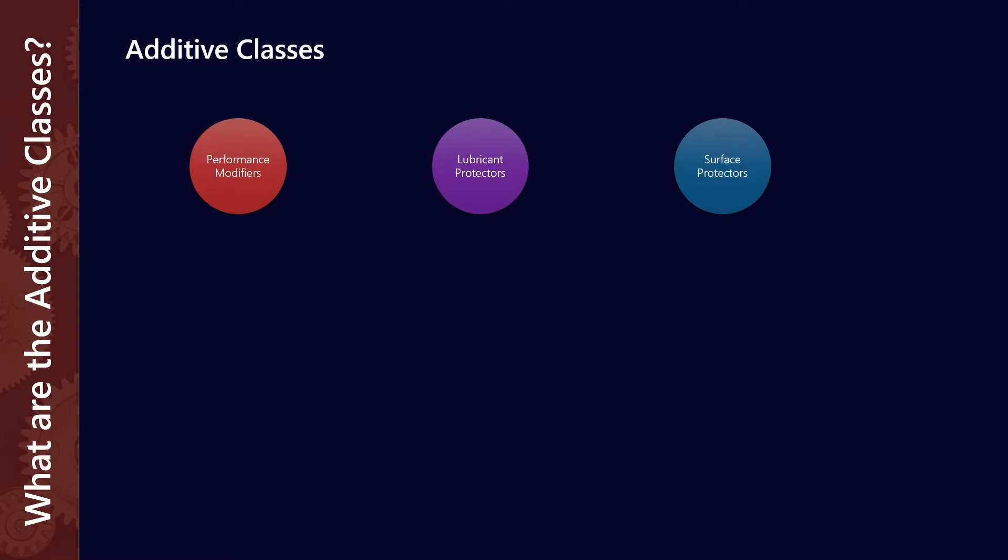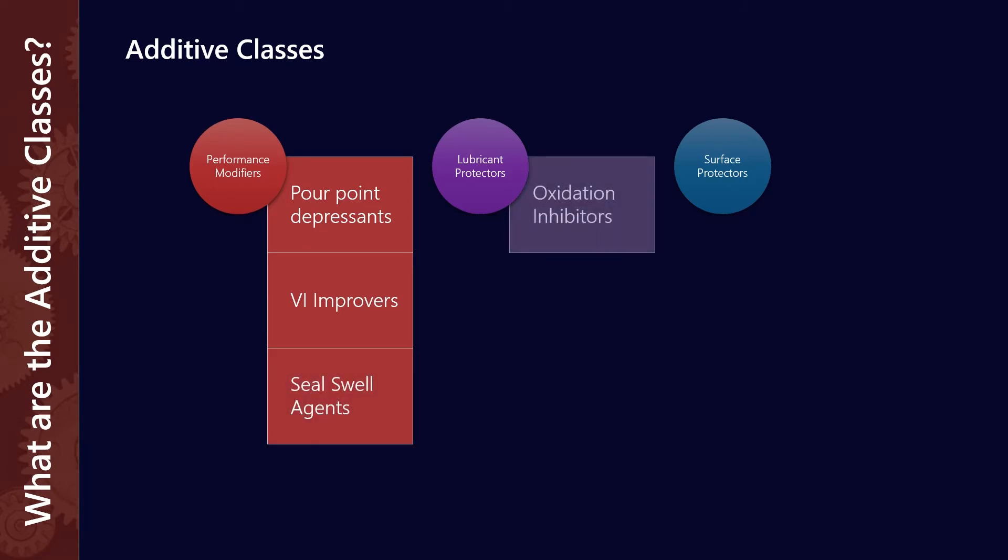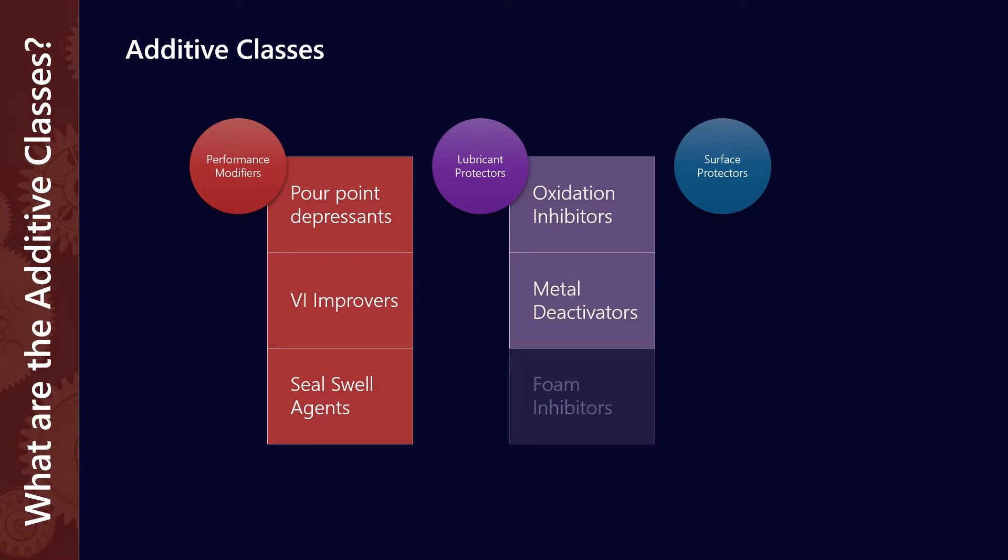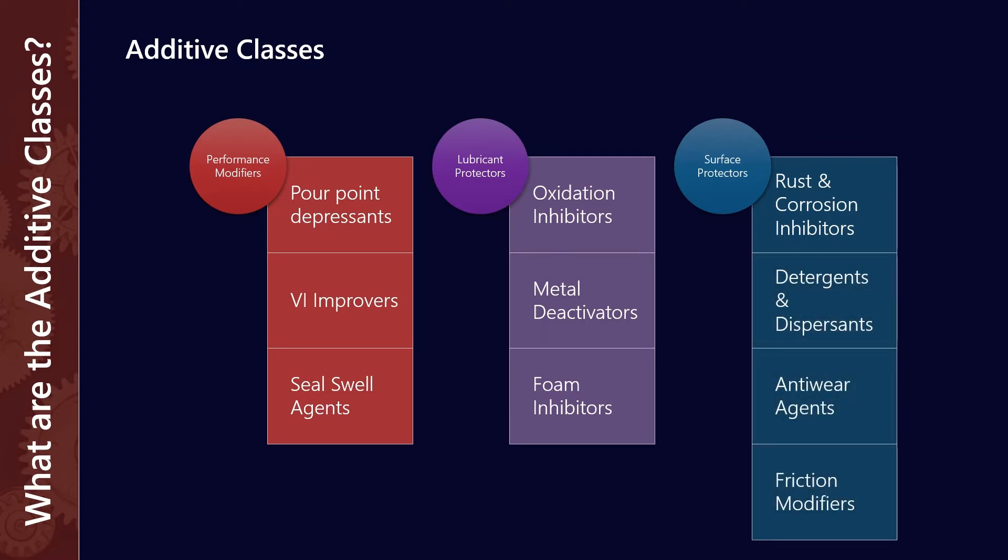Performance modifiers include pour point depressants, VI improvers, and seal swell agents. Lubricant protectors are oxidation inhibitors, metal deactivators, and foam inhibitors. Surface protectors are rust and corrosion inhibitors, detergents and dispersants, anti-wear agents, and friction modifiers. We'll do a really brief overview of what each of these do.